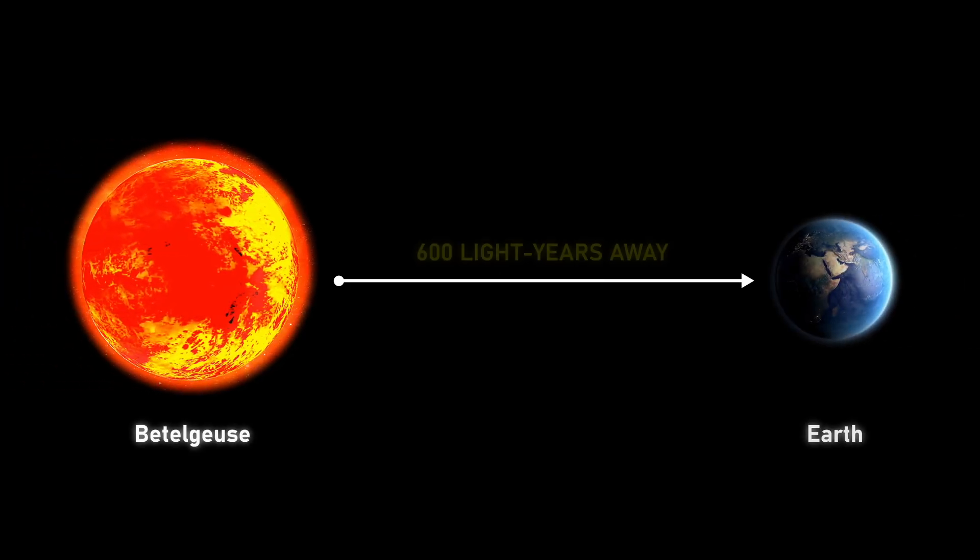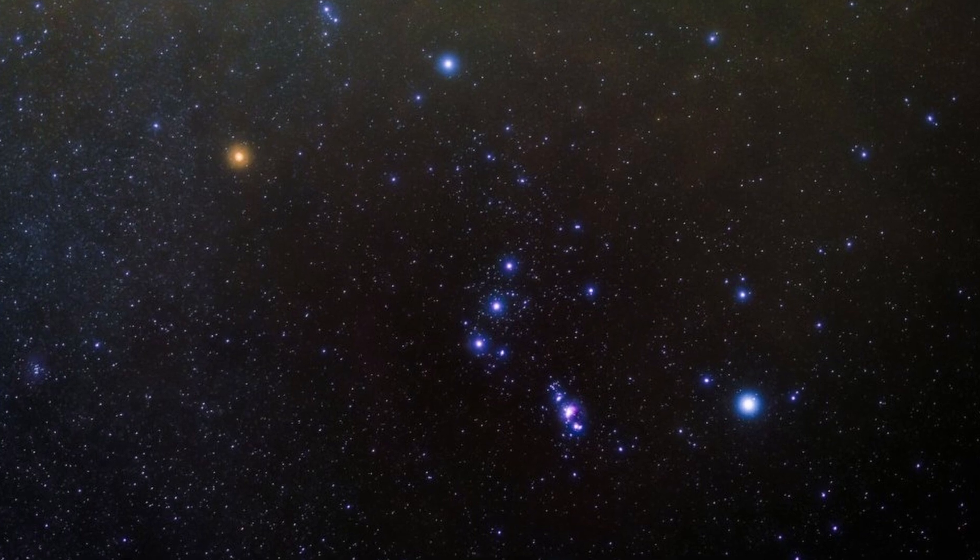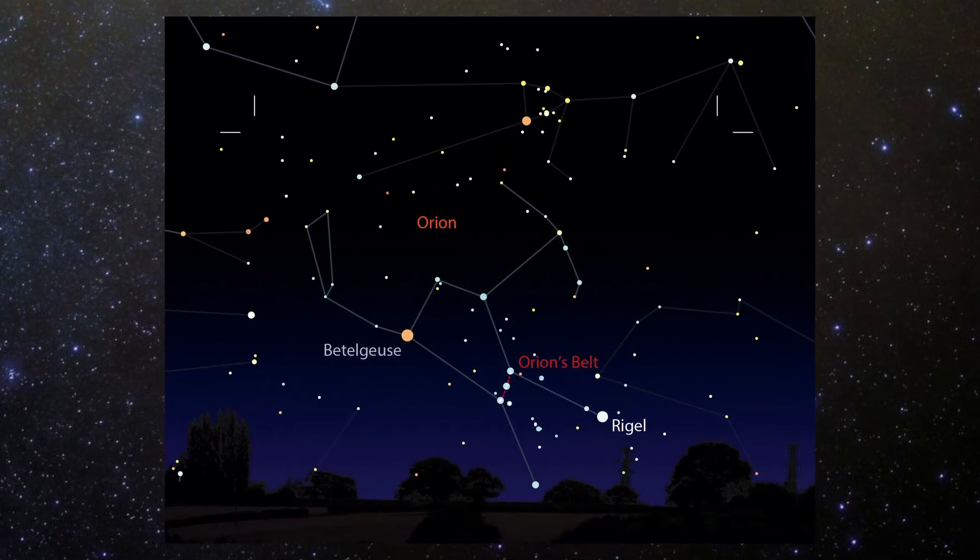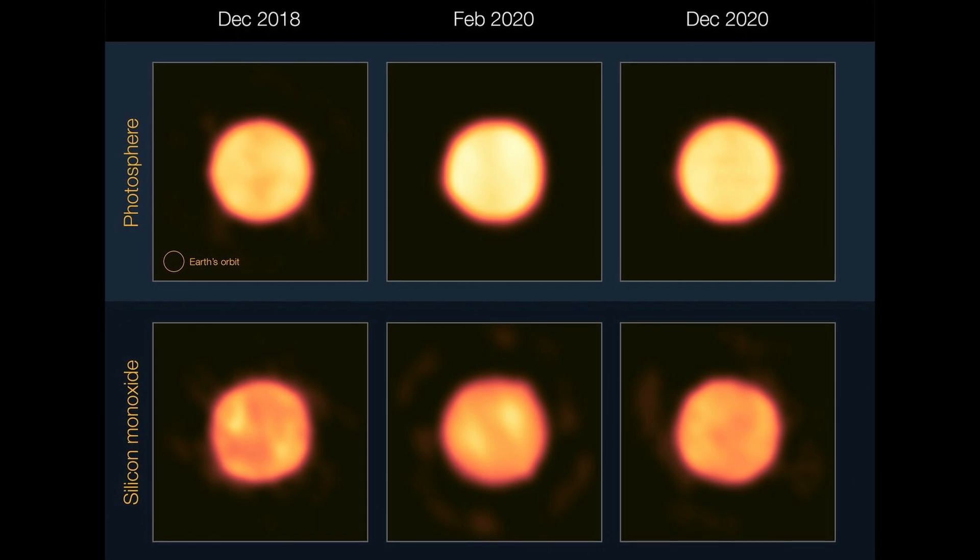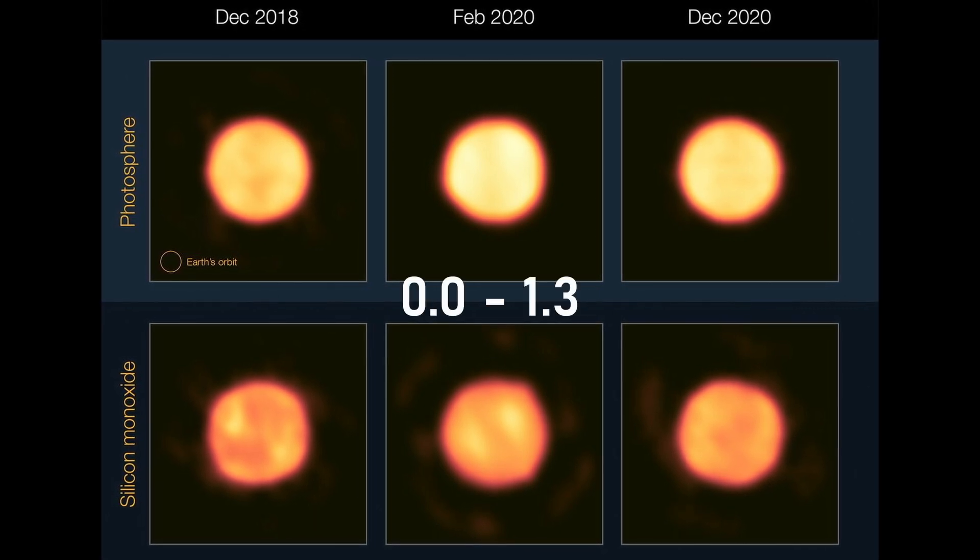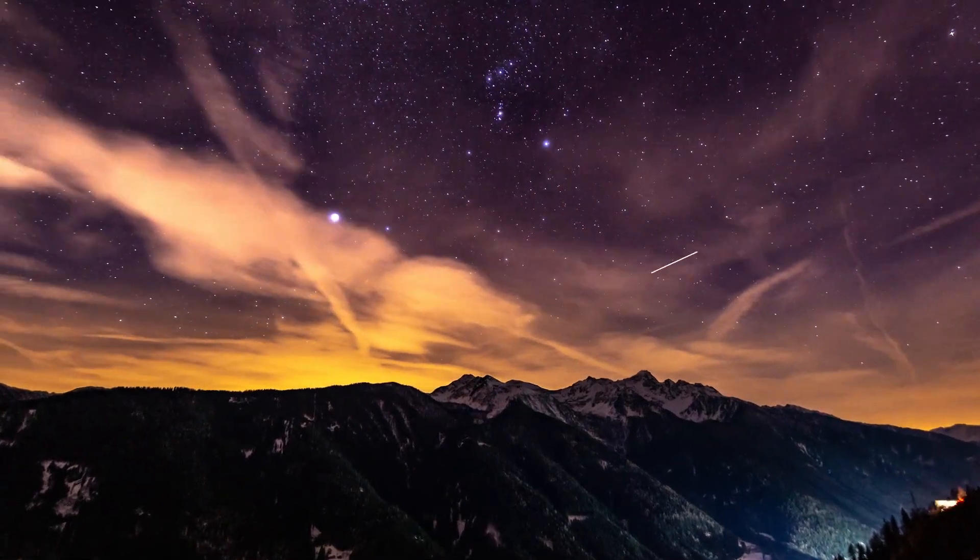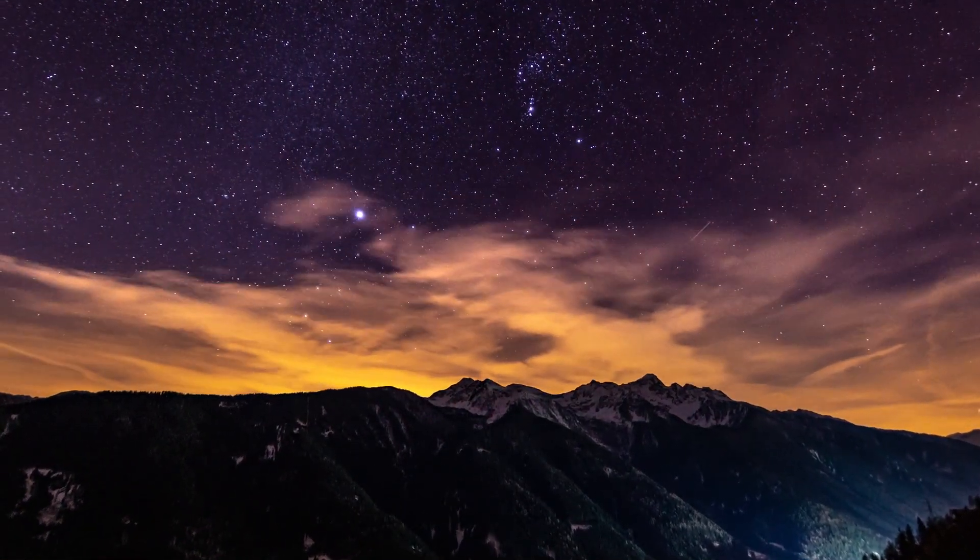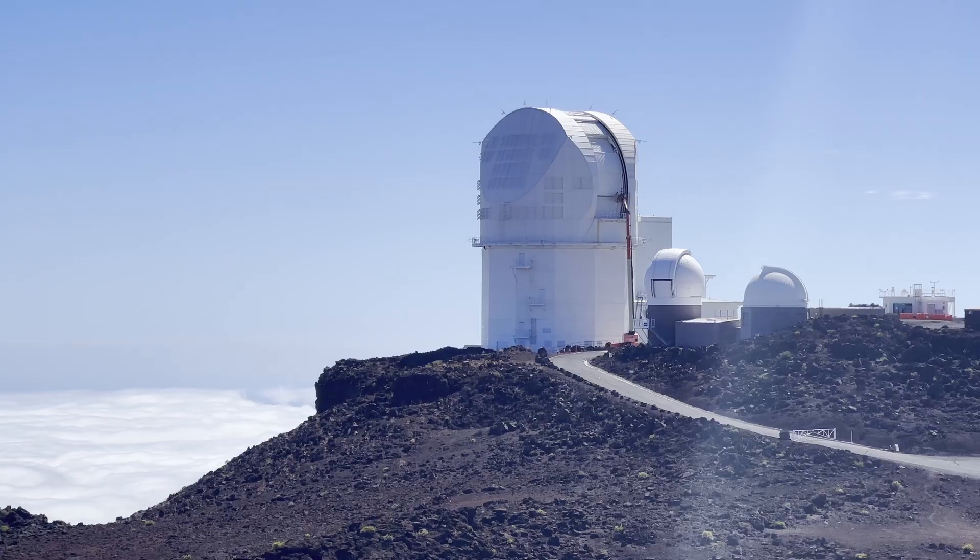Gaia's most recent parallax places Betelgeuse at about 600 light years from Earth, meaning the starlight you see tonight left the star around 1400 CE. As a semi-regular variable, its brightness swings between magnitude 0.0 and 1.3, changes tracked by backyard telescopes each night, and large surveys like ASASSN and the upcoming LSST.